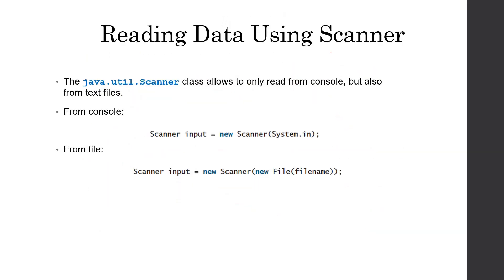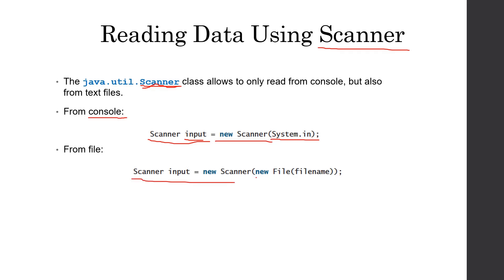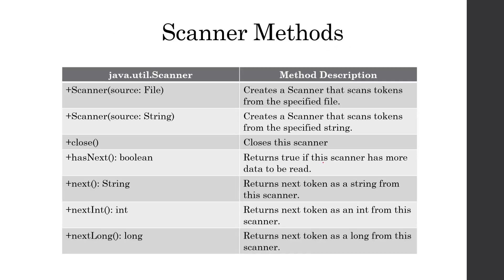Now we'll talk about reading data with the Scanner class. You may already be familiar with Scanner because we use it to read data from the console. However, the Scanner class allows us not only to read from the console but also from text files. As a quick reminder, to read from the console you write: Scanner input = new Scanner(System.in). But if you want to read from a text file, the declaration is the same but inside the parameters you write new File and the file name.